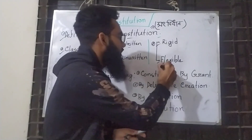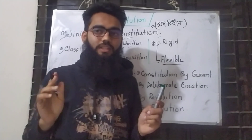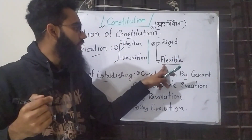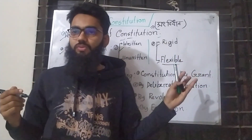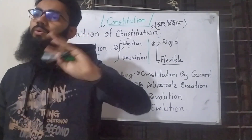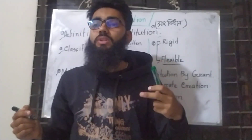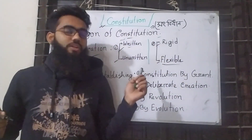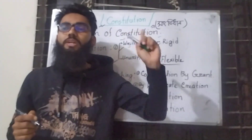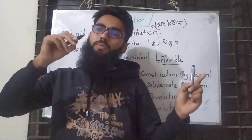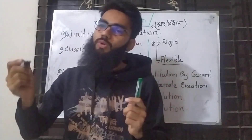The decision is that rigid constitutions are very difficult to amend. The amendment process for a rigid constitution requires a special procedure. If you want to amend it, a special majority is required — for example, two-thirds majority. That means the constitution has been amended multiple times through this special process.